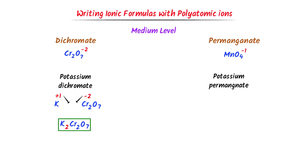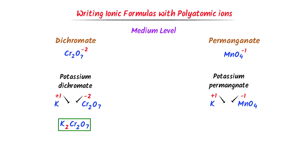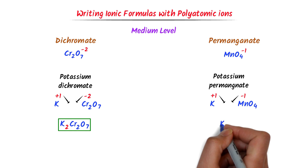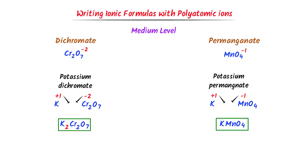In case of potassium permanganate, potassium is in group 1 with oxidation state positive 1, while the charge on permanganate ion is negative 1. I cross their respective charges and I get KMnO₄, which is the chemical formula of potassium permanganate. Using this simple trick, we can write the chemical formulas of ionic compounds with polyatomic ions.